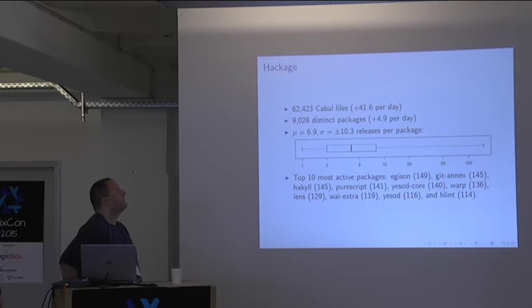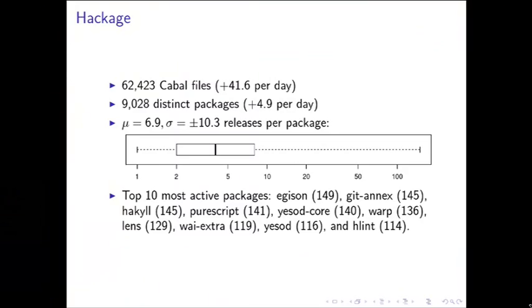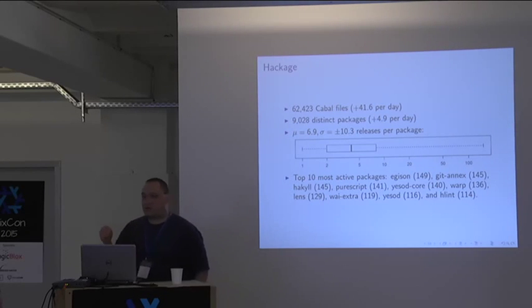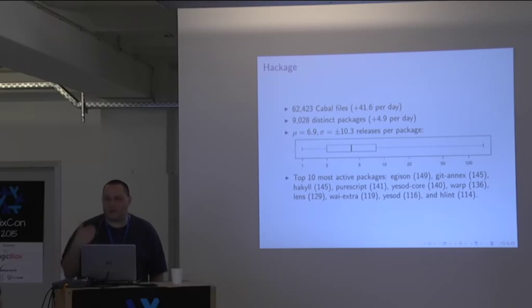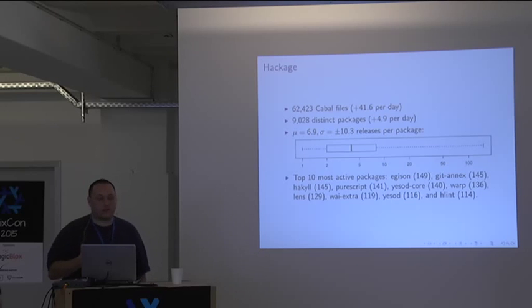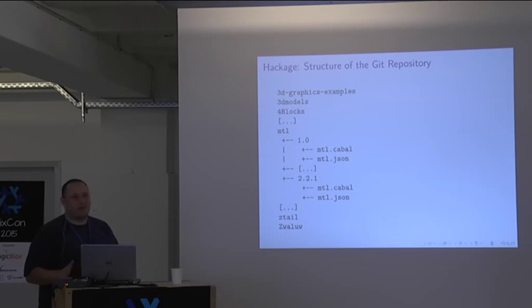Hackage contains over 60,000 Cabal files grouping into about 9,000 packages, meaning on average every package releases approximately seven versions. A box plot shows half of all packages have between two and eight versions released. Some packages have 150 releases — releasing roughly once a week — while others release every couple of months, and many never release a new version after the initial one.